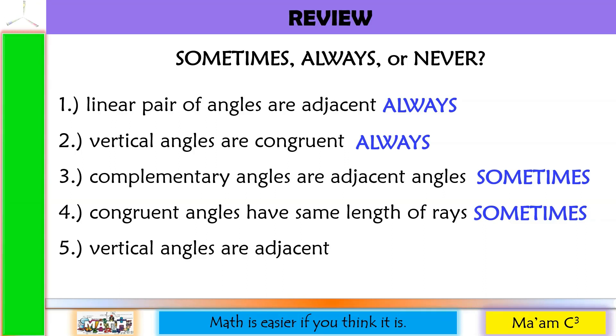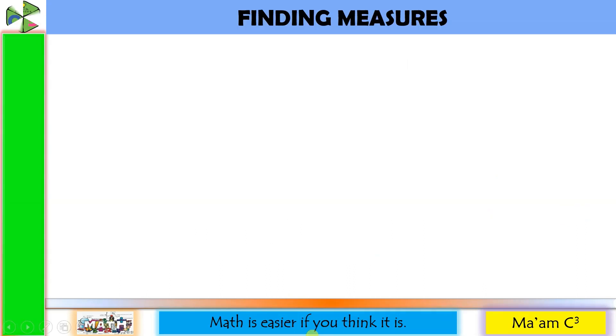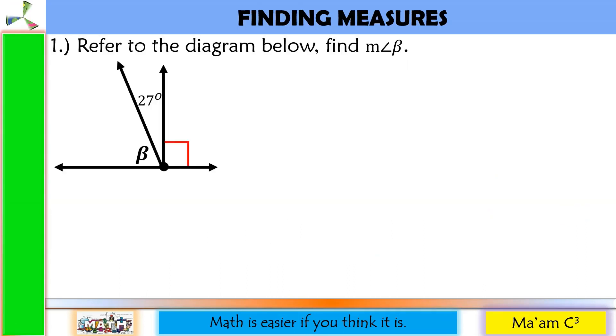And last one: Vertical angles are adjacent. This one is never. Let us start finding measures. Number 1 — refer to the diagram below. Find the measure of angle beta.